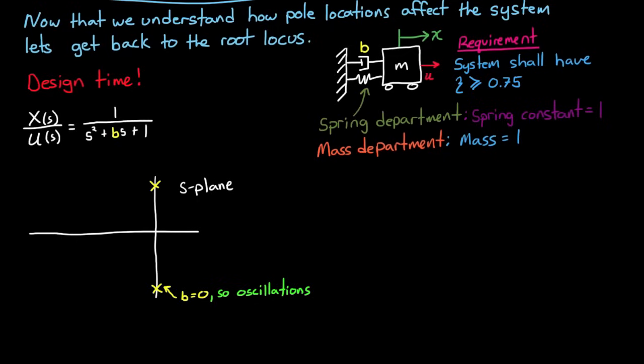Now here's what the root locus would look like for this system. As you can see, the poles start here when b equals 0, which is undamped oscillations exactly as you would expect from 0 damping. And as we increase the damping, the poles move further into the left half plane until you get to the critical damping value where the two poles split and separate on the real line.